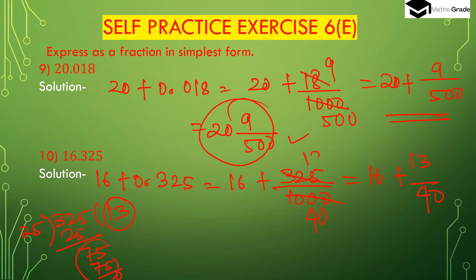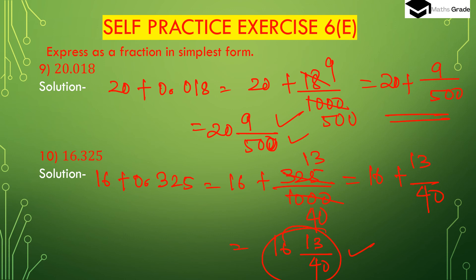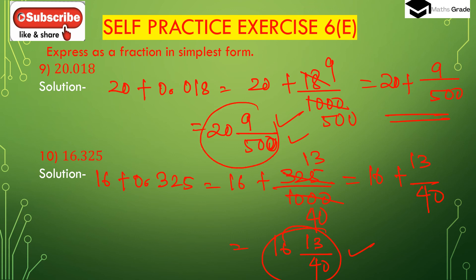So 16.325 is equal to 16 and 13 divided by 40, that is 16 13/40, which is in simplest form. To summarize: 20.018 is 20 9/500, and 16.325 is 16 13/40. Both are in simplest form.